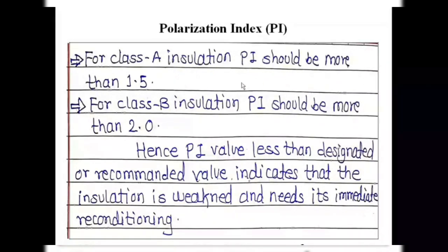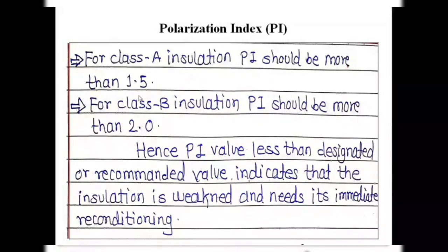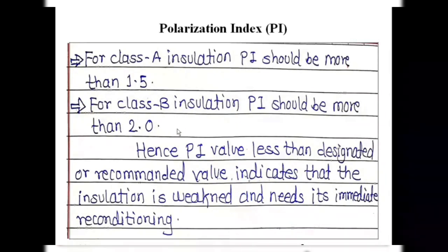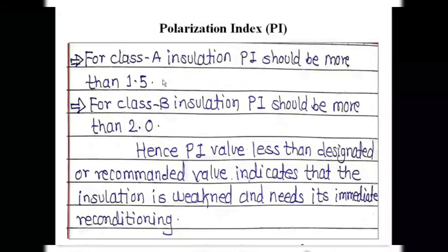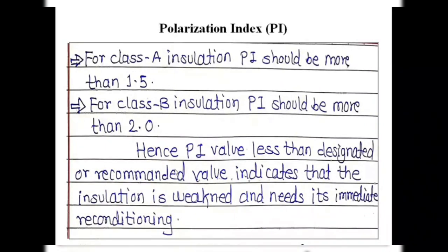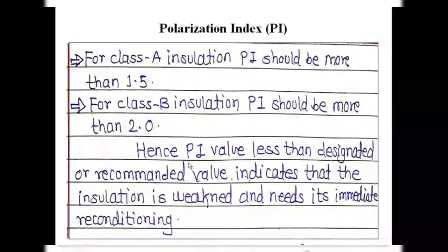For Class A insulation, the PI should be more than 1.5 for a healthy condition of the electrical equipment. The permissible PI value varies depending upon the class of insulation. If the value obtained is below the recommended limit for the given insulation class, immediate action must be taken. If the value is above the limit, the insulation is in good condition. The PI should be evaluated periodically as part of the maintenance schedule.